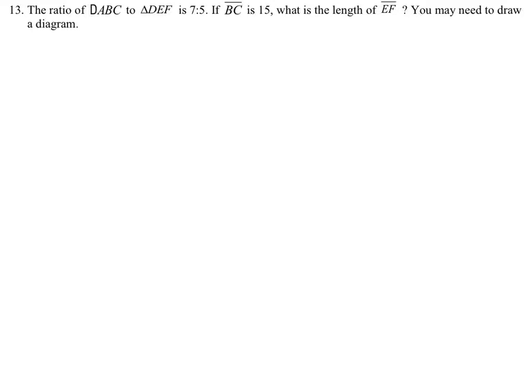The ratio of triangle ABC to triangle DEF is 7 to 5. If side length BC is 15, what is the length of EF?